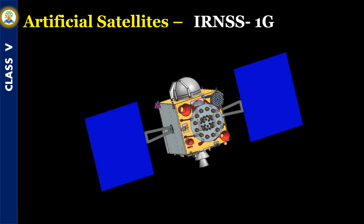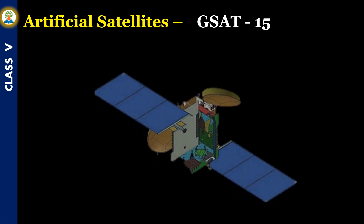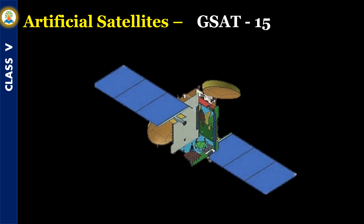IRNSS-1G is the seventh satellite in the Indian Regional Navigation Satellite System. It is an independent regional navigation satellite system. GSAT-15 is a communication satellite which was launched on 11 November 2015.